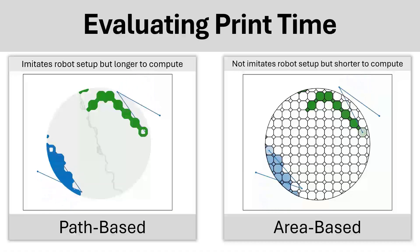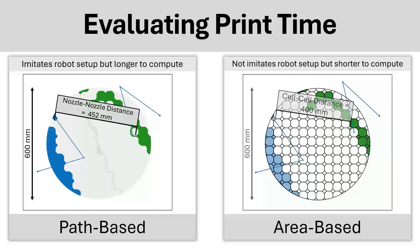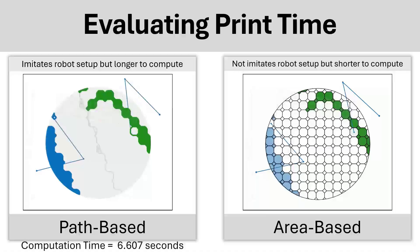However, the area-based does not really imitate the robot setup, but it's a lot shorter to compute. Here you can see the difference in computing the distance between the nozzle-to-nozzle and the cell-to-cell, which is more conservative.